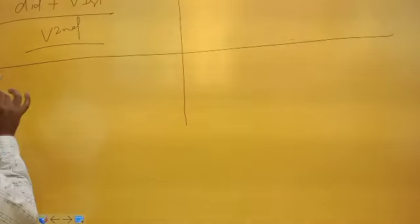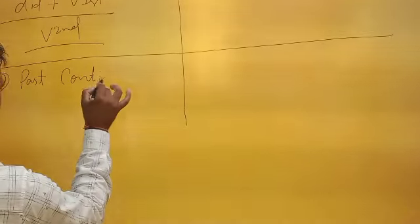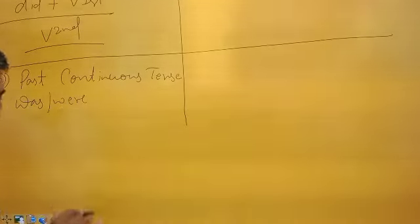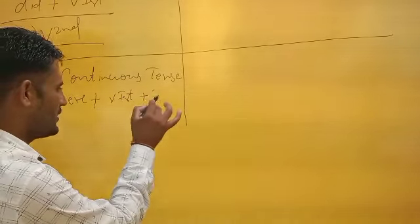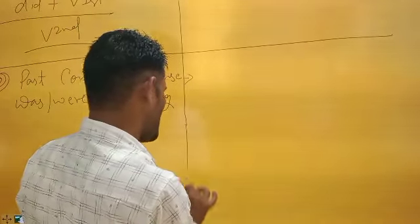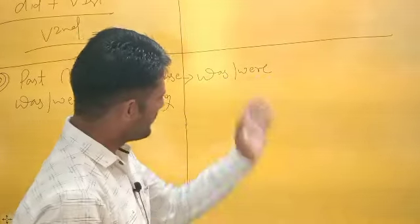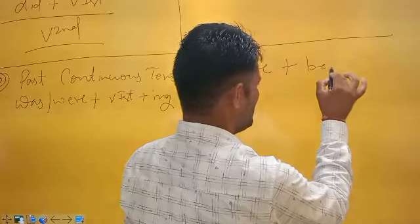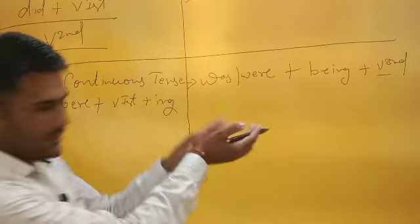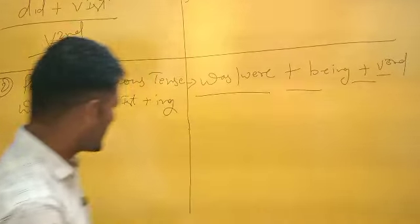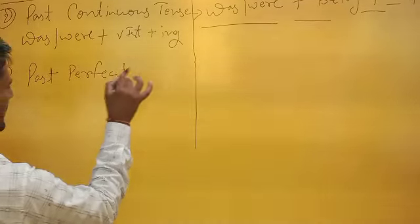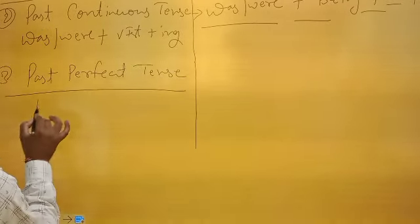Next, let's see Past Continuous Tense. The active structure of past continuous is 'was/were plus first form plus -ing.' This is the structure you get in active voice: 'was/were plus verb-ing.' To change this into passive voice: 'was' stays for singular and 'were' stays for plural, followed by 'being' plus the third form of the verb. So the passive structure becomes 'was/were being plus third form.'